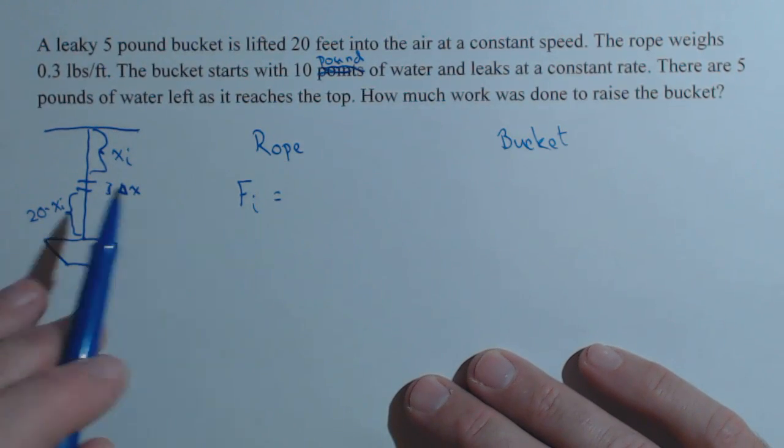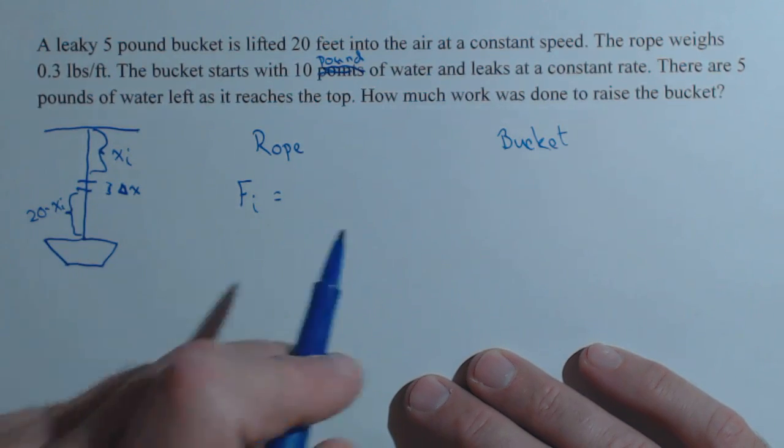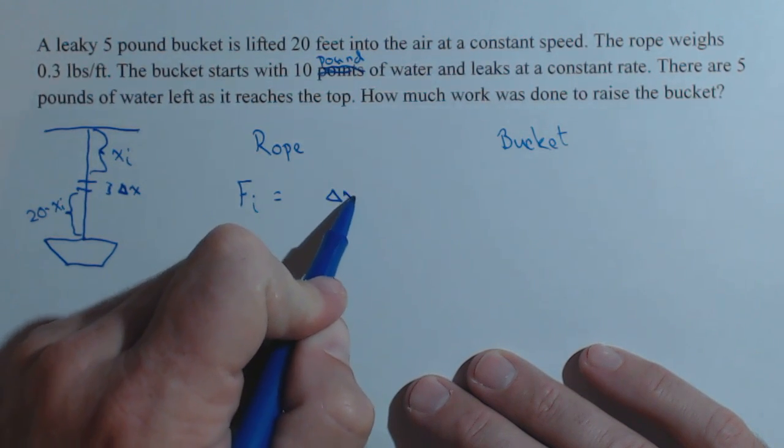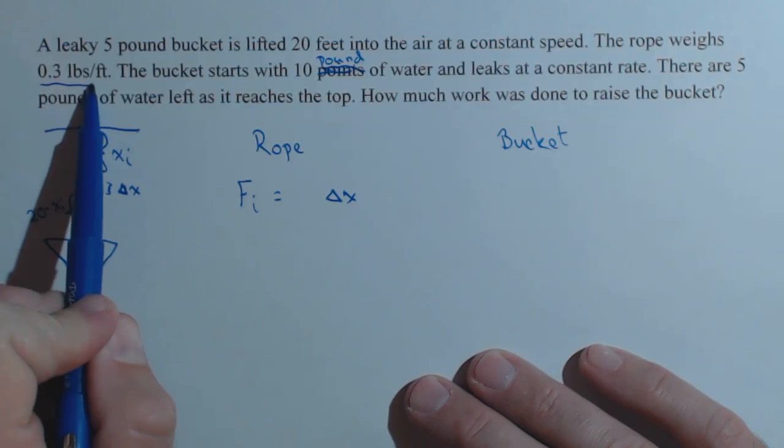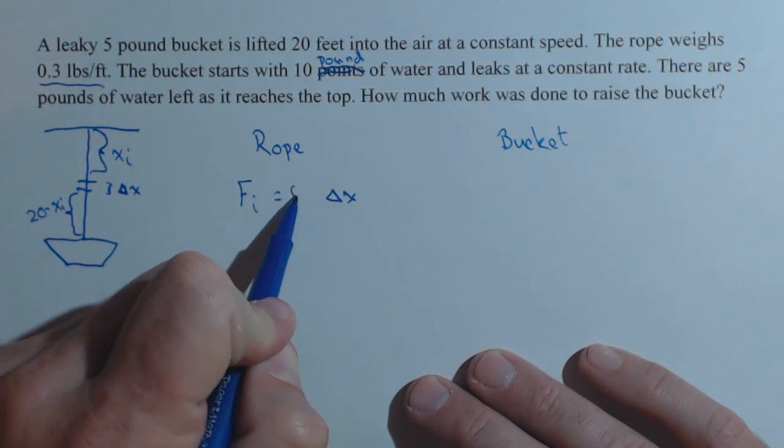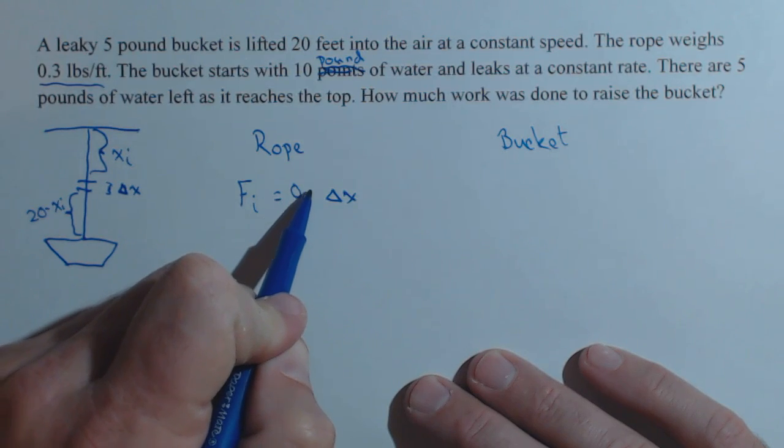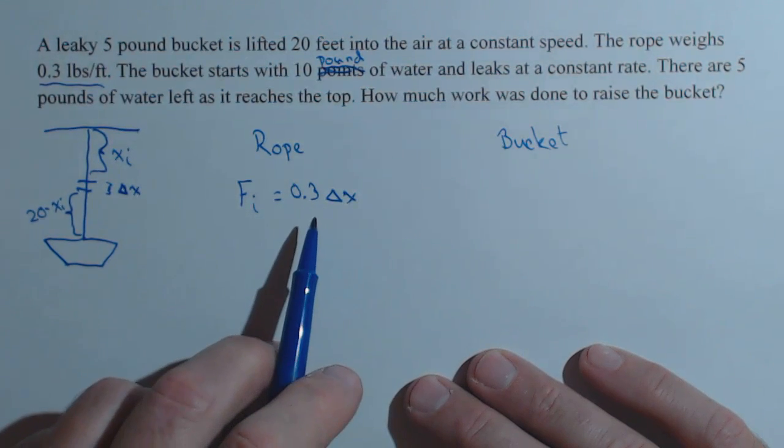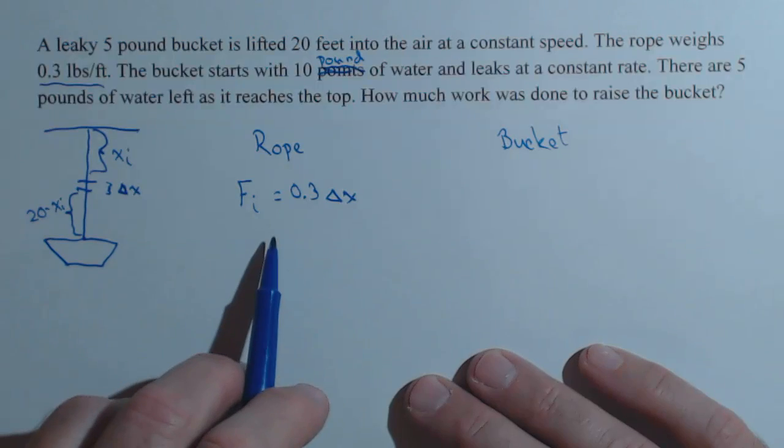So the force on the ith slice, well, it's got a length of delta x, and we were told that the rope weighs 0.3 pounds per foot. We multiply that by the number of feet. We get how many pounds of rope we're looking at, which is the total force. So this would be measured in pounds.